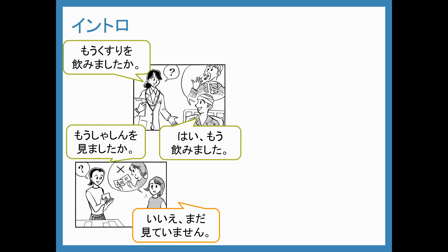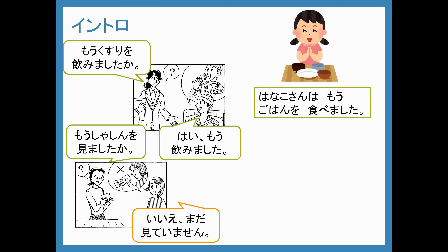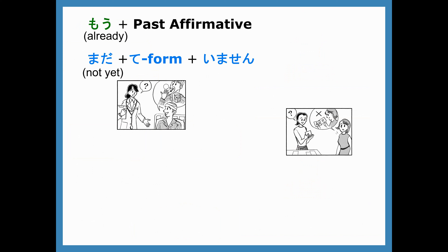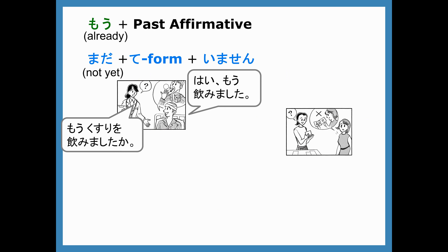So this もう and まだ are new topics for today. Hanako-san wa mo gohan wo tabemashita. Tarou-san wa mada gohan wo tabete imasen. We use もう plus the past tense affirmative to say we've already done something. So when the doctor asks mo kusuri wo nomimashita ka, it means 'have you taken your medicine already?' And hai, mo nomimashita means 'yes, I have taken it already.'